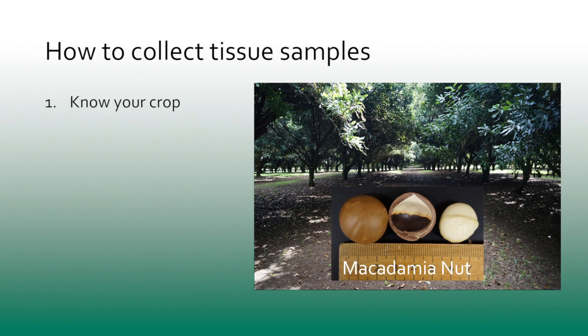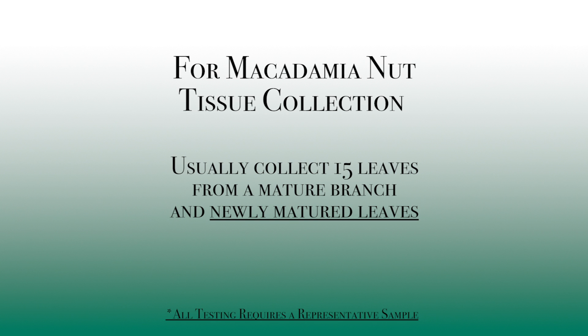How do we collect tissue samples? The first thing is to know your crop — what is the crop species you're working with on your farm? That's going to determine how many samples you take and which part of the plant you're actually sampling from. In macadamia, for example, we usually collect 15 leaves as a representative sample, and we collect from a mature branch with a newly matured leaf. Just like with your soil samples, you want to take a representative sample.